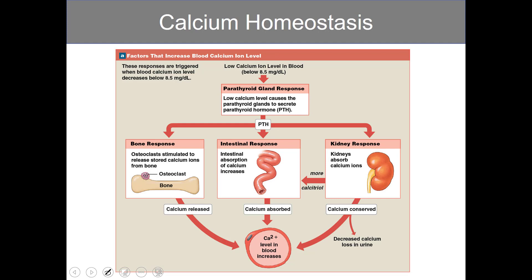These figures come from your textbook and are very similar to the content we just covered. For those who like pictures, sometimes this is easier to follow. We start with a low blood calcium concentration, below 8.5 milligrams per deciliter. As blood calcium levels drop, the parathyroid glands respond by releasing PTH. PTH travels through the body and at the bones, it stimulates osteoclasts to release calcium, dissolving bone and raising blood calcium levels.